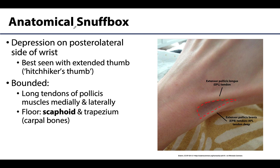Now, regarding the name: if there were another commonly used name for this region I would certainly use it, but this is what it's referred to as. Very occasionally you hear the term 'radial fossa,' but that really hasn't caught on. It's named the snuff box because individuals would hold snuff — a kind of ground-up tobacco — in this depression before inhaling it through the nose. Not a typical practice nowadays, but the name persists.